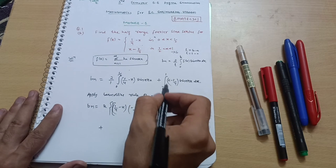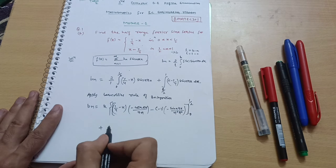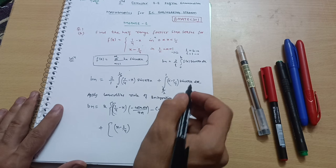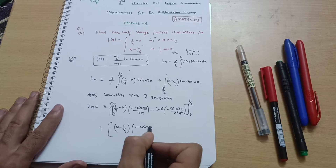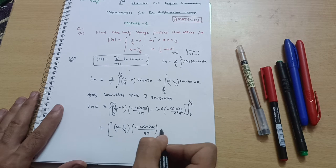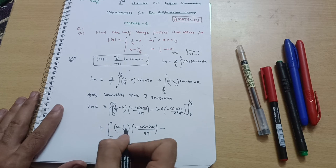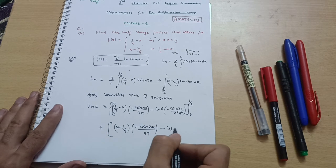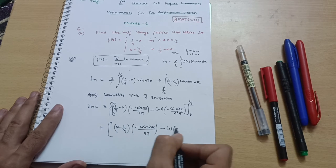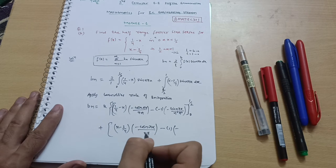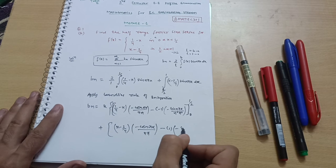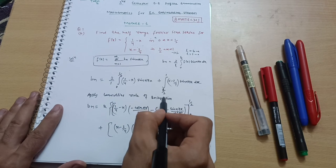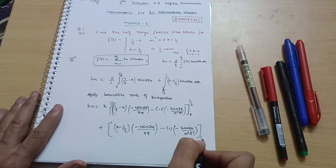For the second integral, keep (x - 3/4) as is, integration of sin(nπx) gives -cos(nπx)/(nπ), then minus the differentiation of (x - 3/4) which is 1, times the integration again: -cos(nπx)/(nπ) integrates to sin(nπx)/(n²π²). Limits shift from 1/2 to 1.